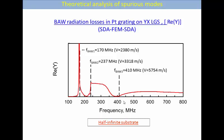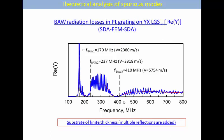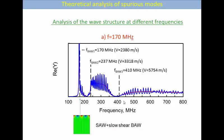This is the admittance calculated for platinum grating on YX-cut langasite. There's a real part of admittance which shows us all propagation losses. We see that slow shear, fast shear, and the longitudinal bulk waves just start radiation at certain cutoff frequencies that are dependent on their velocity around the surface.